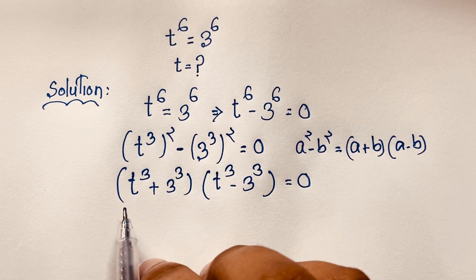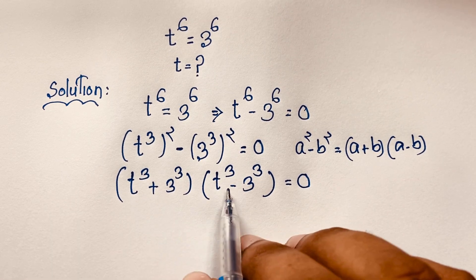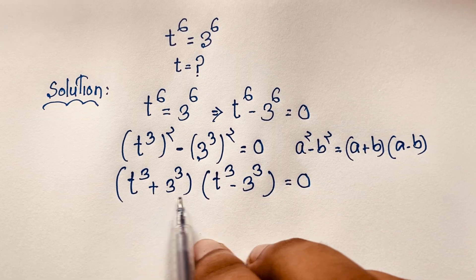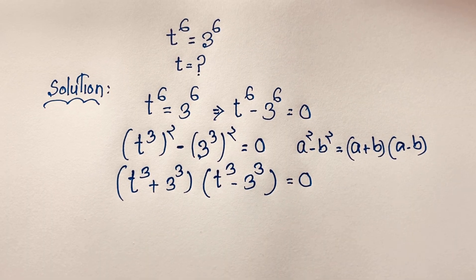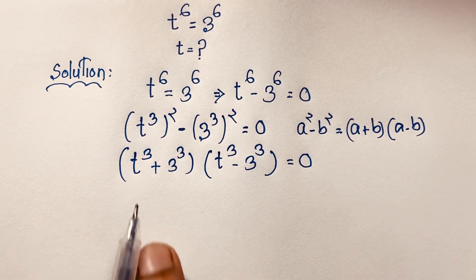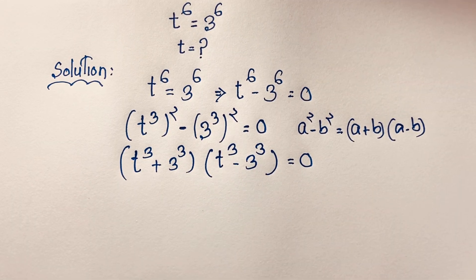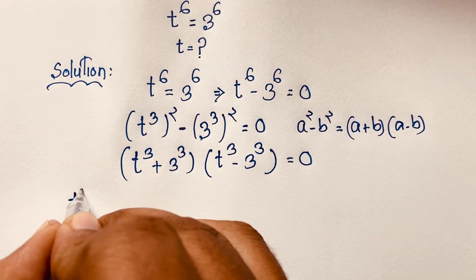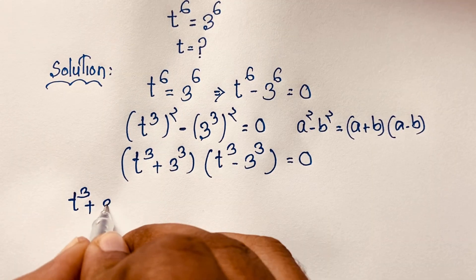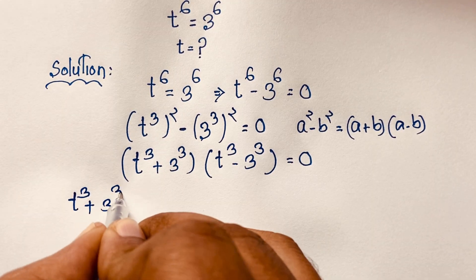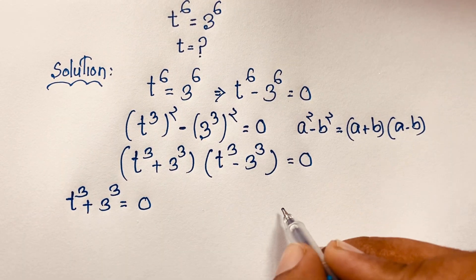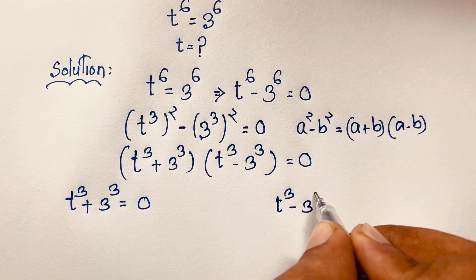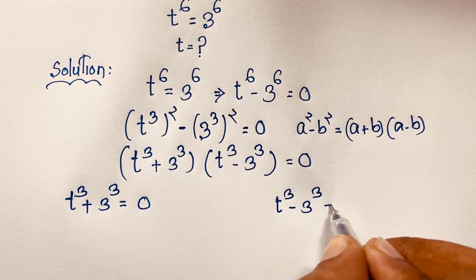Now we have (a + b)(a − b) and we find two cases. Our first case is t³ + 3³ = 0, and our second case is t³ − 3³ = 0. Each factor is set equal to zero.